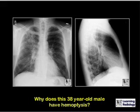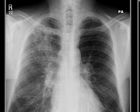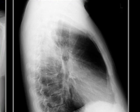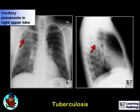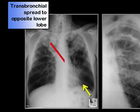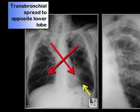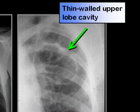This is Diagnosis 5. Why does this 38-year-old male have hemoptysis? There is a cavitary pneumonia in the right upper lobe, which the red arrow is pointing to. On the lateral film, we can see that it's posterior. Whenever you have a cavitary lesion in the upper lobe, tuberculosis is the diagnosis of exclusion. TB has a propensity for transbronchial spread from one upper lobe to the opposite lower lobe, and cavities in tuberculosis tend to be thin-walled upper lobe cavities.